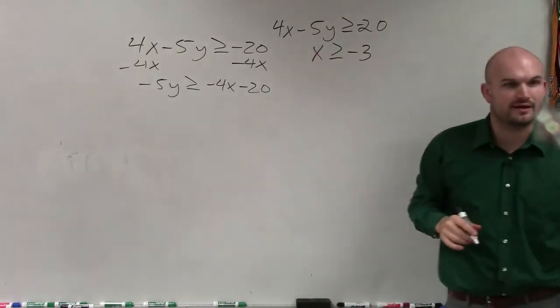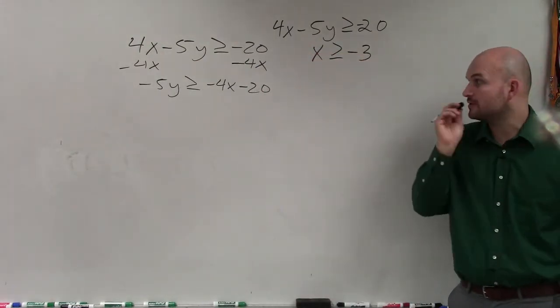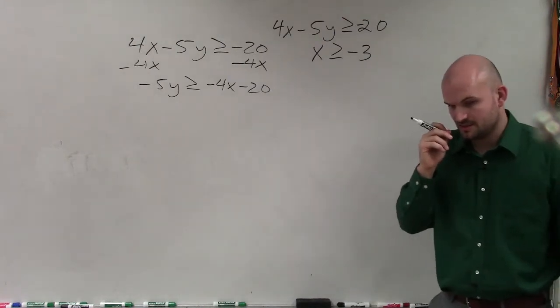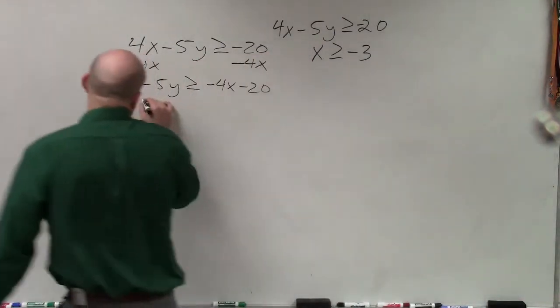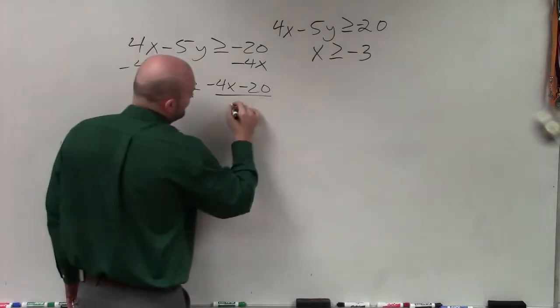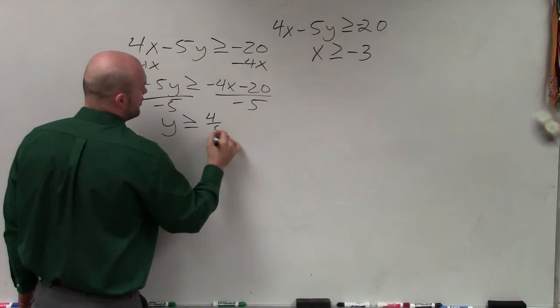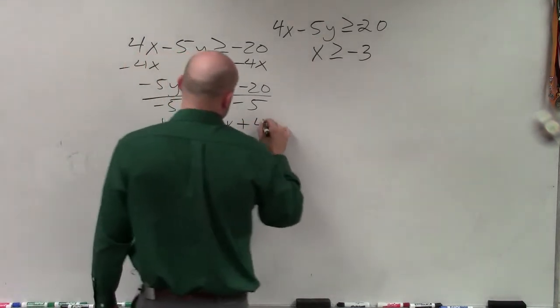Is everybody okay with what I did there? I'm going to try to move through this one a little bit quicker. Good? Yes? Good. Okay. Now divide by negative 5. And I have y is greater than or equal to 4 fifths x plus 4.